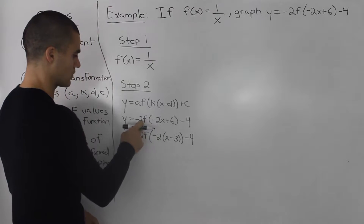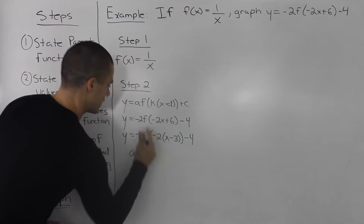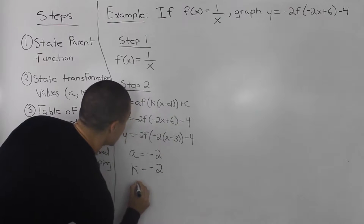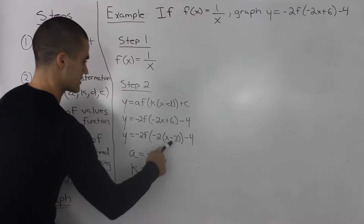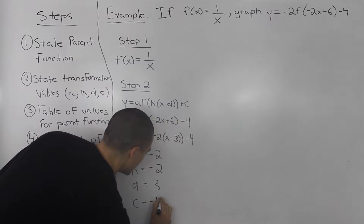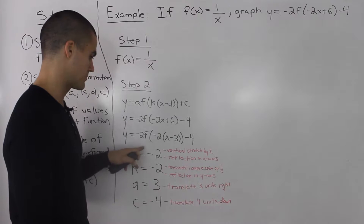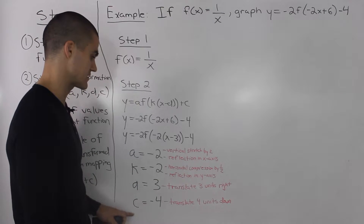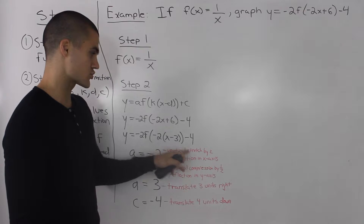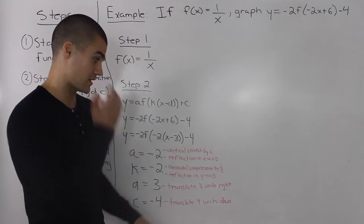Now it's easy to see what each number corresponds to. The a value is negative 2, the k value is negative 2 as well, the d value is positive 3 — from x minus d — and the c value is negative 4.